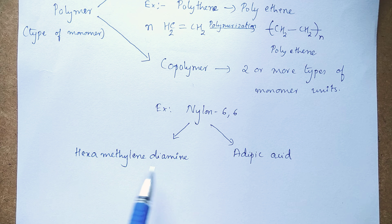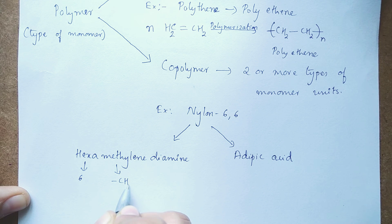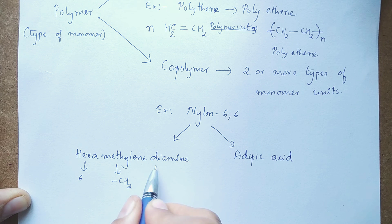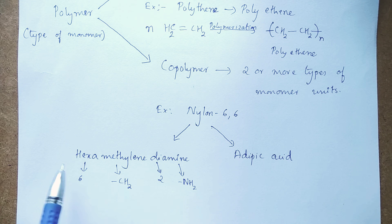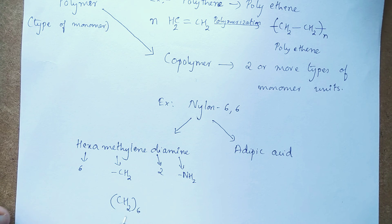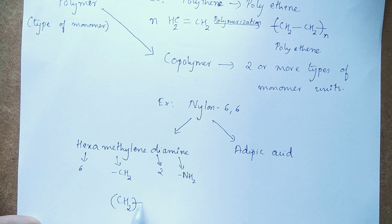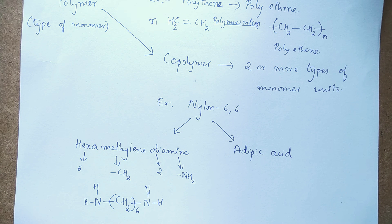Even though the name is long, the formula is very simple to write. Hexa is 6, methylene means CH₂ group, di is 2, and amino is NH₂ group. So for hexamethylene diamine: we have 6 methylene groups, so write CH₂ six times, and attach two amine groups — one NH₂ on each side. So the structure is: H₂N–(CH₂)₆–NH₂. That is hexamethylene diamine.